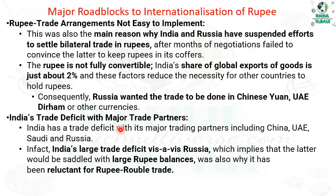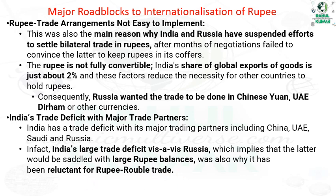India has a trade deficit with its major trading partners including China, UAE, Saudi Arabia and Russia. India's trade deficit with Russia implies that the latter would be left with a large Rupee balance, which is also why Russia has been reluctant to engage in Rupee-Ruble trade.